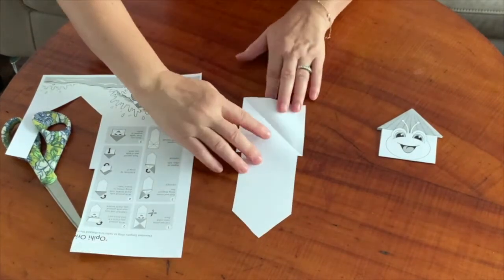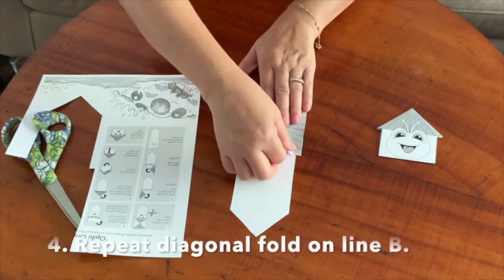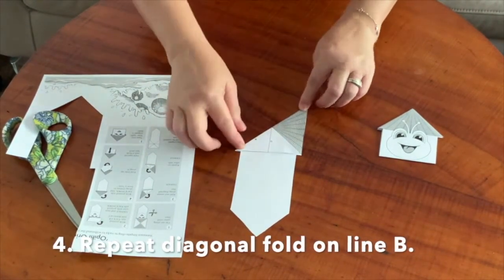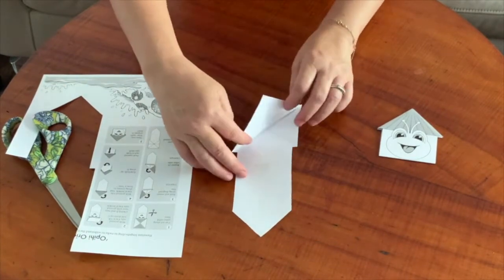Unfold and fold diagonally on the other side. Again, match your corners and create a nice crease. Unfold.